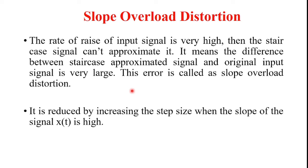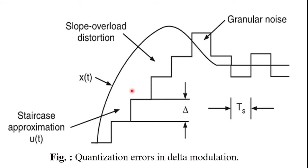From this figure we can observe slope overload distortion, and using the same figure I will explain granular noise. Granular noise occurs when the step size is too large compared to small variation in the input signal. For very small variation in the input signal, the staircase signal is changed by a large amount because of the large step size.